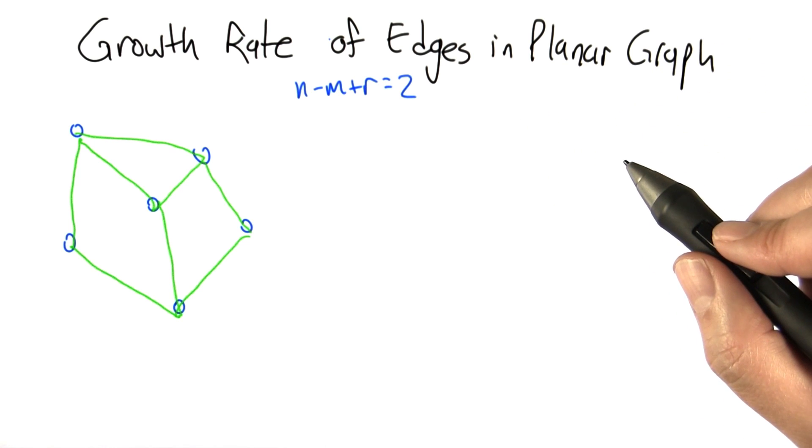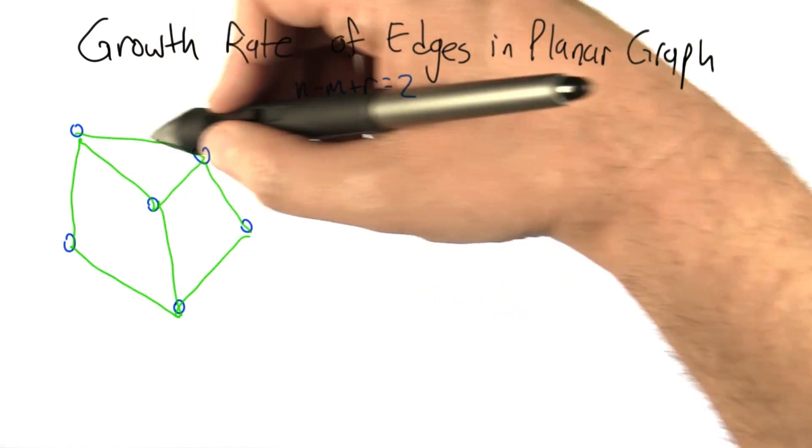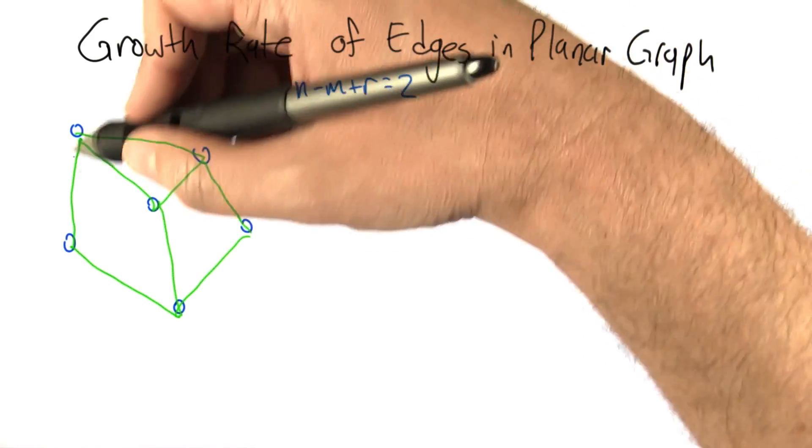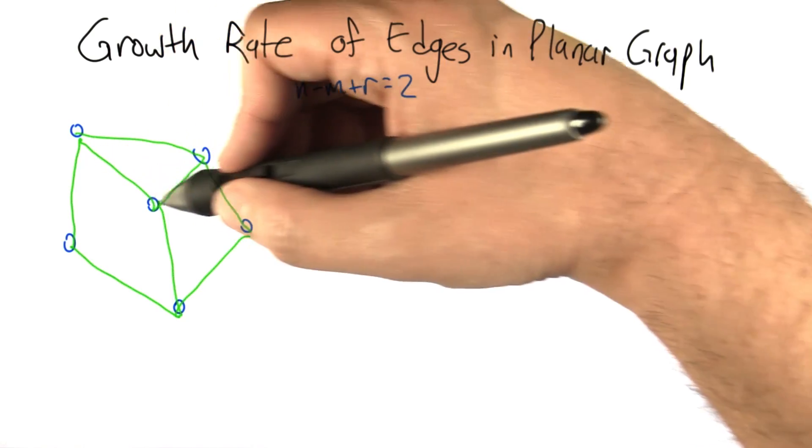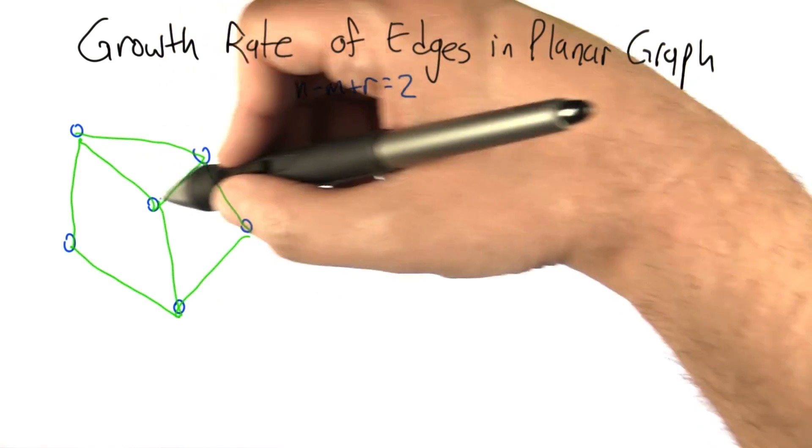We're going to make use of two other facts. One is that every region in a planar graph has to be encapsulated, has to be bounded by at least three edges for it to be a region. So it might be more than that, but it has to be at least three.